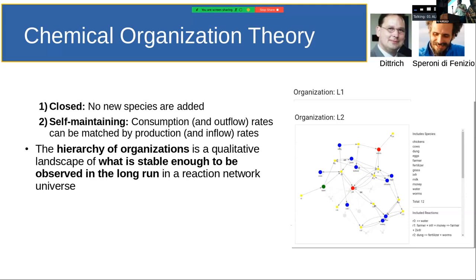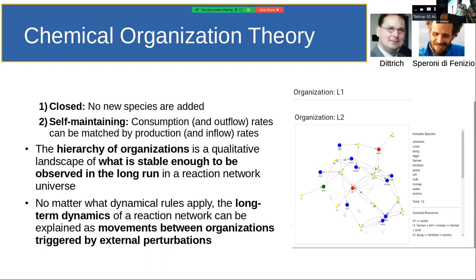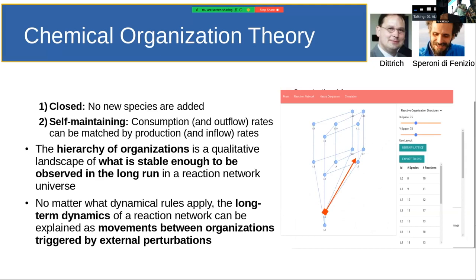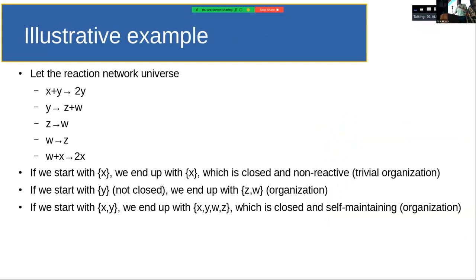But they form a landscape of what is stable enough to be observed in the long run. So what are the subspaces of the phase space where you can possibly find an asymptotic viable state or trajectory, attractive? And interestingly, also, no matter what dynamical rules we apply, for a very wide class of dynamics, the long-term dynamics can be understood as movements between organizations triggered by external perturbations. So this is the hierarchy of organizations. And this can be like the movement between organizations. So that's the partial order set of all the organizations for a typical reaction network.